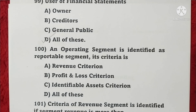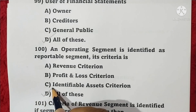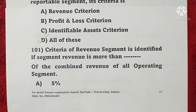Question 100: An operating segment is identified as a reported segment based on revenue criteria, profit and loss criteria, and identifiable assets criteria — all of these, so option D is correct. Question 101: A segment is identified by revenue criteria if segment revenue is more than 10% of the combined revenue of all operating segments.